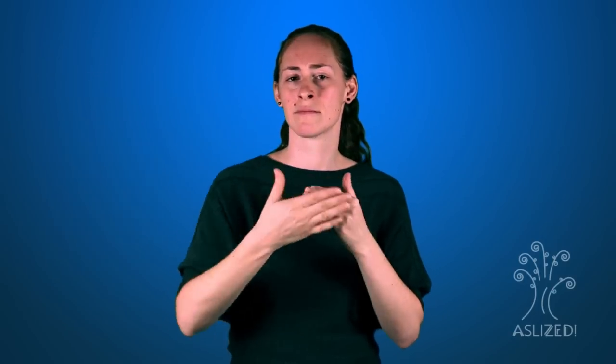In the U.S., there are two predominant perspectives of deaf people. The first is a pathological view that sees deaf people as needing fixing in order to be the same as hearing people.